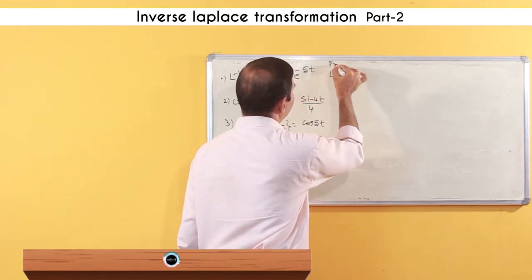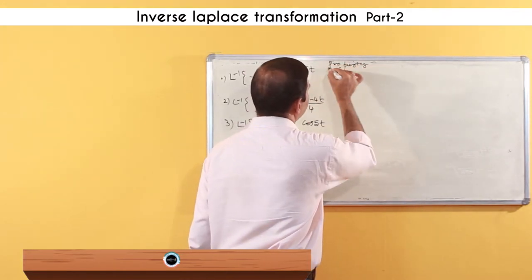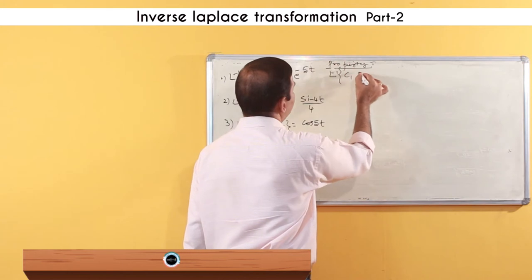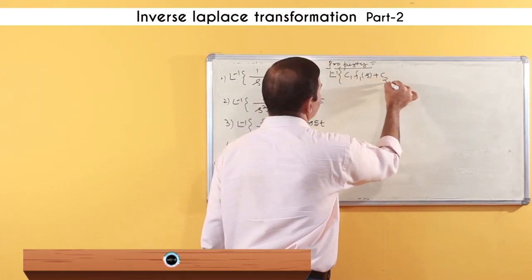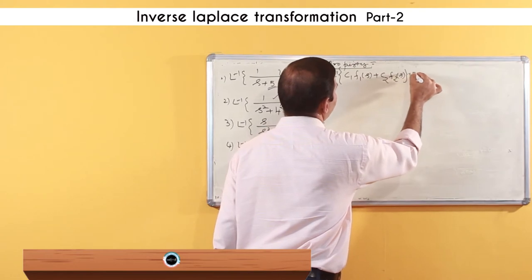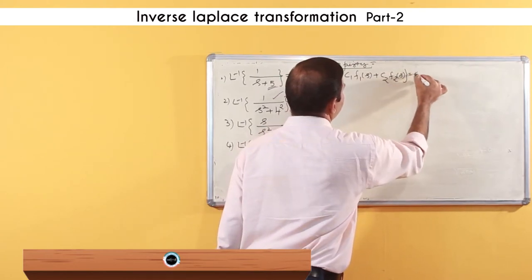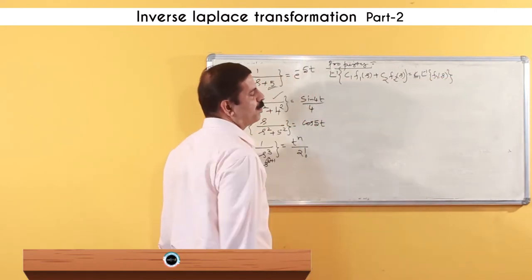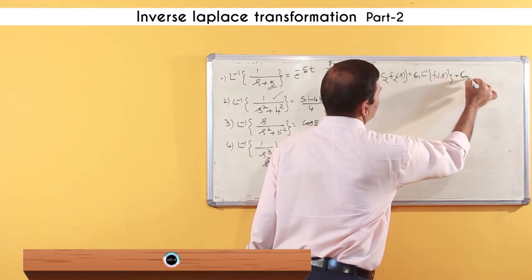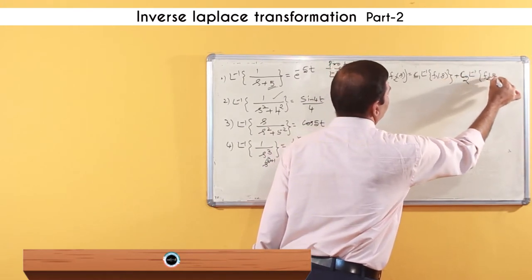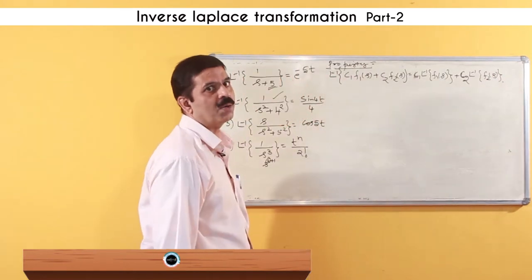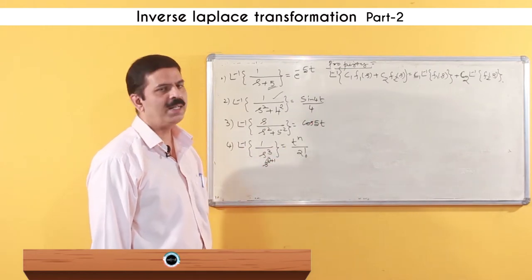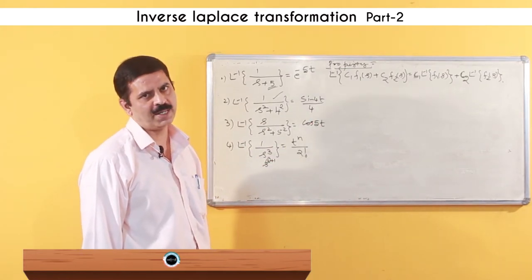This is a simple property used while solving problems: the Laplace inverse of c₁·F₁(s) + c₂·F₂(s) is equal to c₁ times the Laplace inverse of F₁(s) plus c₂ times the Laplace inverse of F₂(s). So c₁ and c₂ are constants that can be taken outside, and then you find the Laplace inverse of each function.